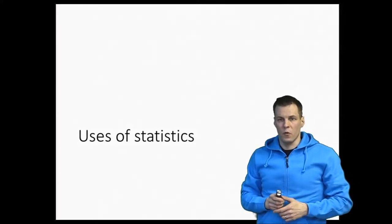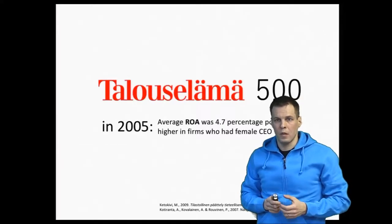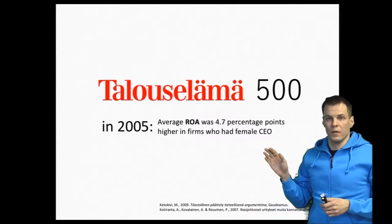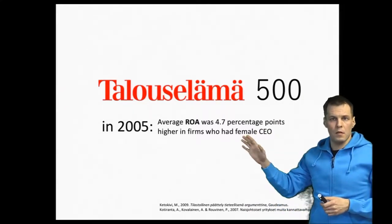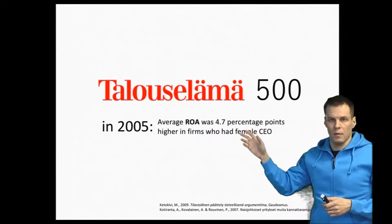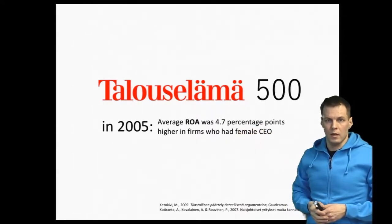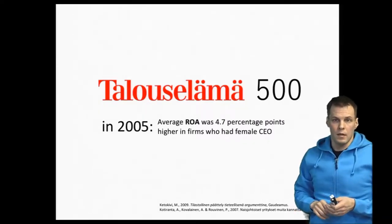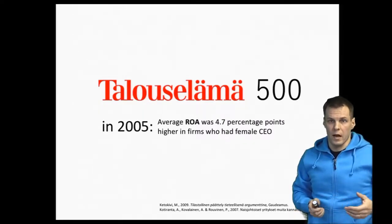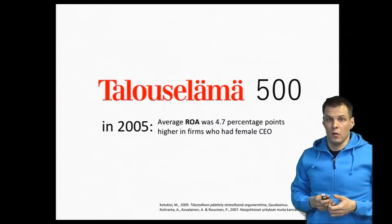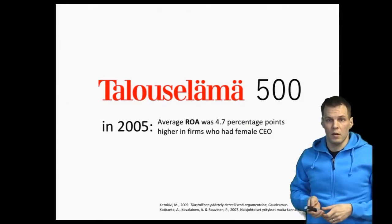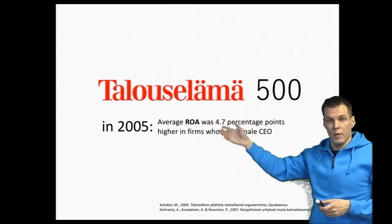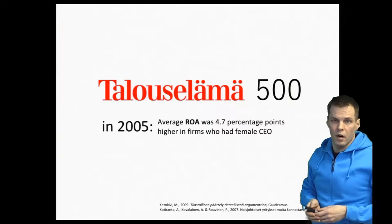Statistical analysis can be used for multiple different purposes. Let's take a look at this example that I'm going to be using in multiple videos. There is a Finnish business magazine called Talouselämä, and every year they publish the Talouselämä 500 list, which lists the 500 largest Finnish companies and presents all kinds of analysis of those companies. It's followed by many reporters and people who follow the Finnish business environment generally.